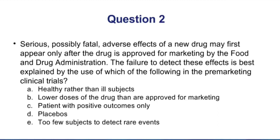Here's our second question. Serious, possibly fatal adverse effects of a new drug may first appear only after the drug is approved for marketing by the FDA. The failure to detect these effects is best explained by the use of which of the following in pre-marketing clinical trials? The fact that we don't see those side effects until the drug has gone to market is because clinical trials in phases one, two, and three used a very small number of patients. The only way to detect rare side effects is with a much larger patient population, and that only happens in phase four post-marketing surveillance. The correct answer is E — there were just too few subjects to detect those rare events.